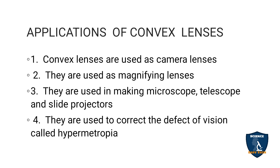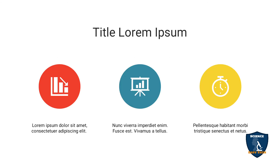Now the applications of convex lens: it is used in camera lenses — all you have a camera lens in your smartphone; through those lenses we zoom and take pictures. It is also used as a magnifying lens, and for making microscopes, telescopes, and slide projectors. And for the defect of vision hypermetropia, that is long-sightedness, a convex lens is used. Thank you for watching the video. If you like, give a thumbs up, share and subscribe to Science Easy Tech channel.